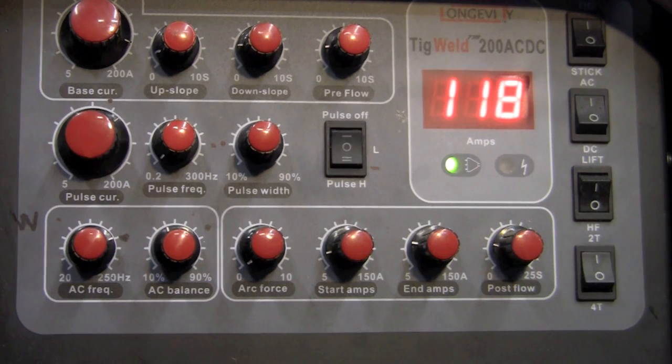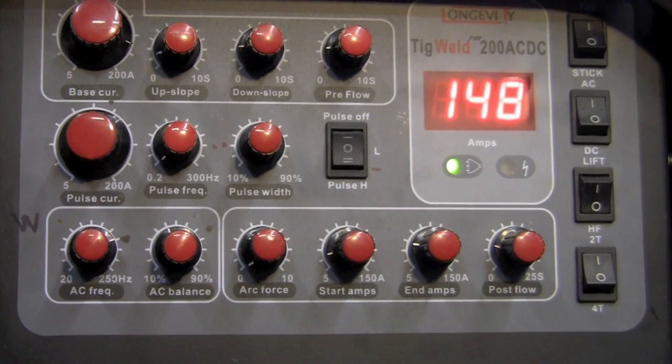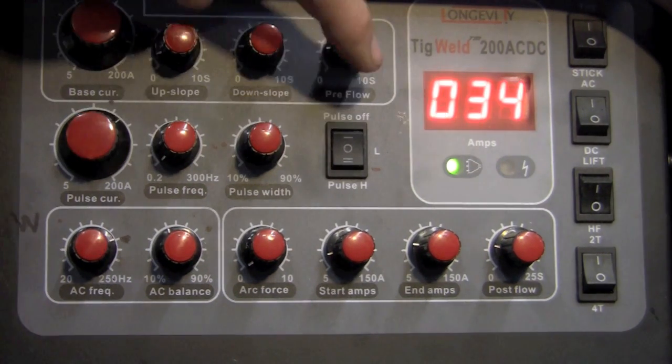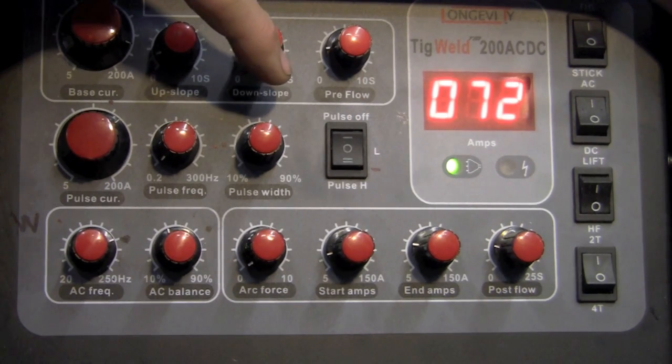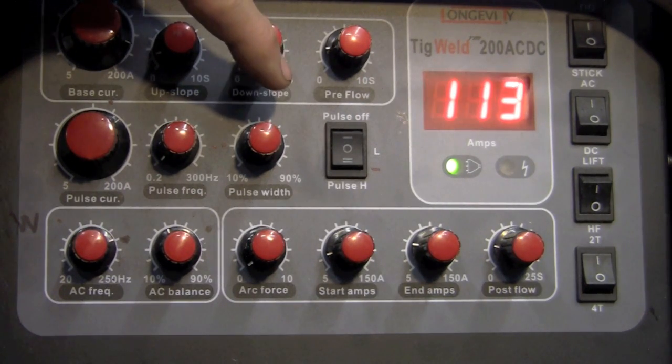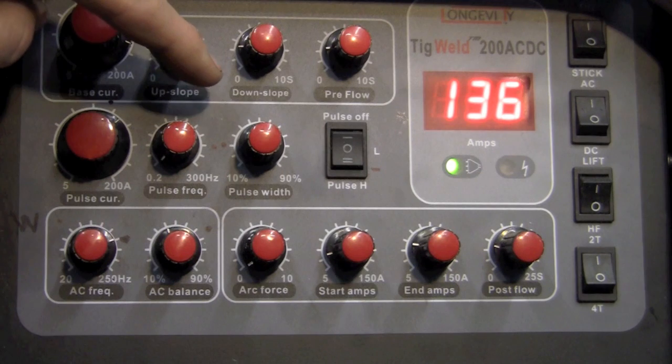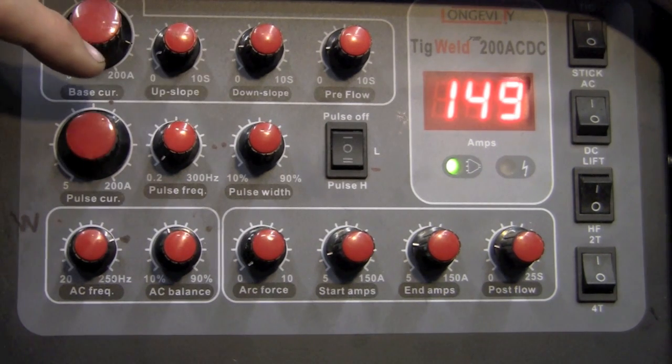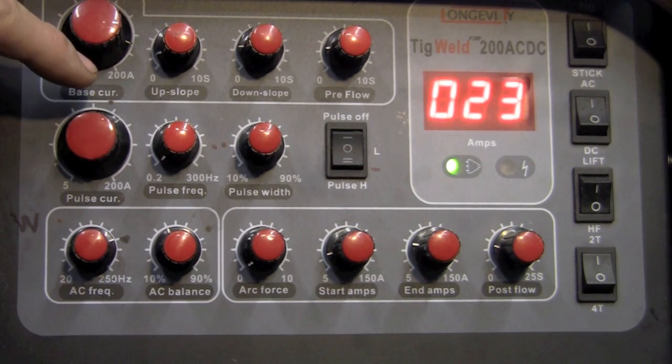Now I'll take you through the machine settings on how I weld aluminum. I have the pulse turned to low. My pulse width is right about 55 to 60 percent. Pulse frequency is down at 0.2 and my pulse current is right about 150 amps.